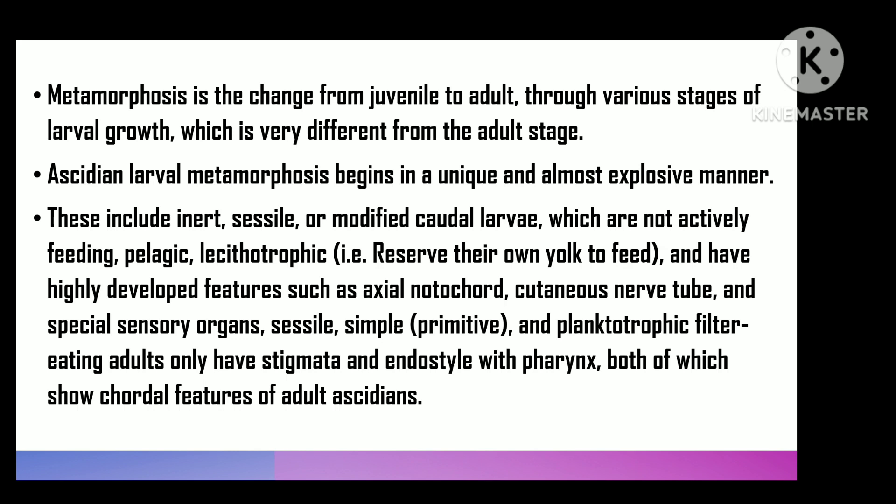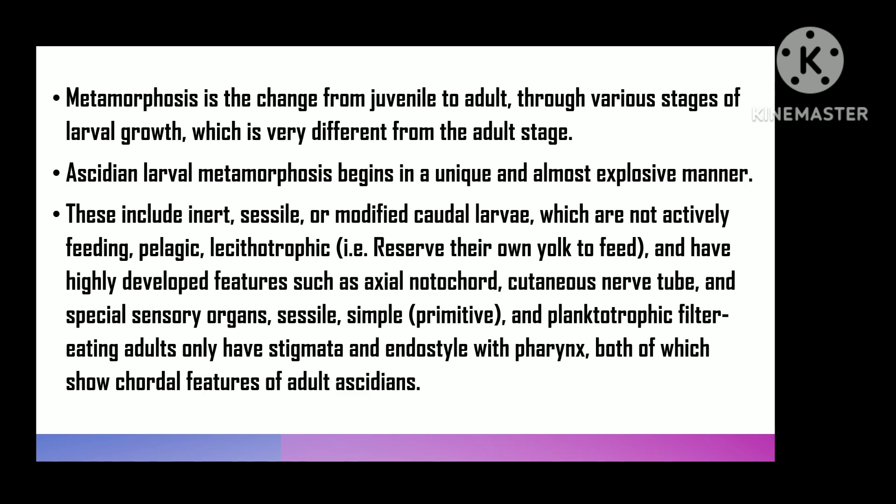It involves the transformation of an active, non-feeding, pelagic, lecithotrophic larva — one that feeds on its own yolk reserves — and a tailed larva having many advanced features such as an axial notochord, dorsal neural tube, and special sense organs, into an inert, sedentary ascidian that is simple, primitive, and planctotrophic filter-feeding adult with only a pharynx with stigmata and endostyle, both indicating the chordate features of the adult ascidian.